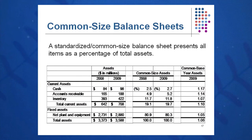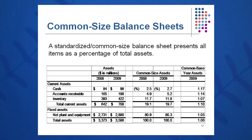We can also look at a common base year. We can take 2008 as a common base year and divide the 2009 value by the 2008 value and get 1.17 for cash — meaning cash in 2009 is 17 percent higher than it was the prior year. That's going horizontally year over year. Again, you can look for problems to see if your receivables are going up too fast, if your inventory is going up too fast, and so on. These common size analyses can help us begin to detect problems.